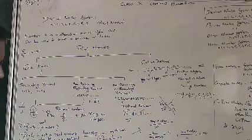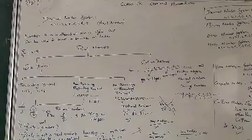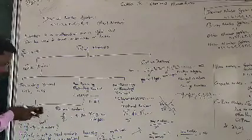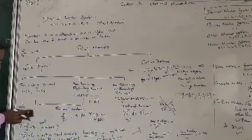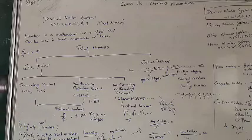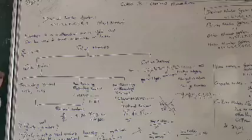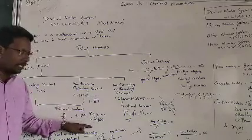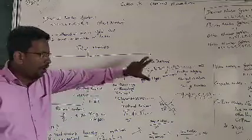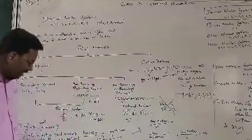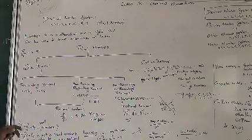So when we speak about rational numbers, it should be in the form P by Q, where P and Q are integers and Q is not equal to 0. Remember, P and Q are integers — we will discuss all the integers again here.